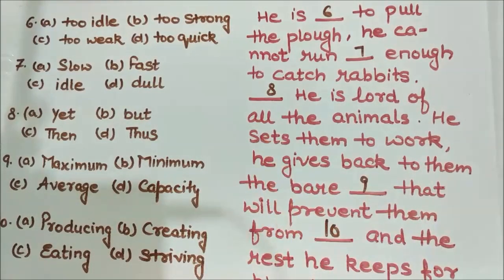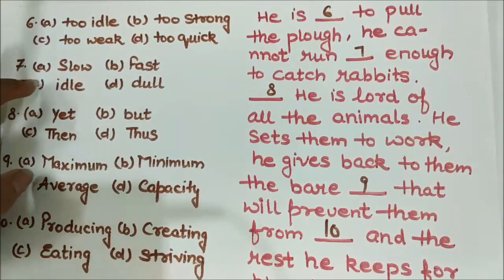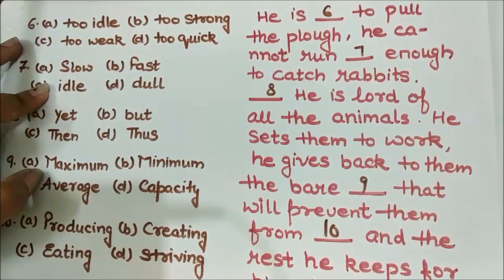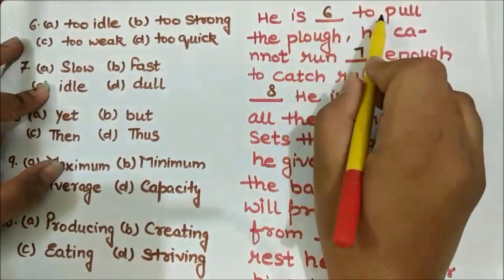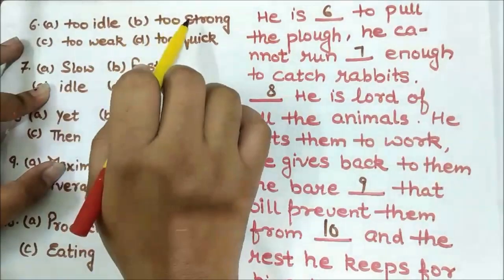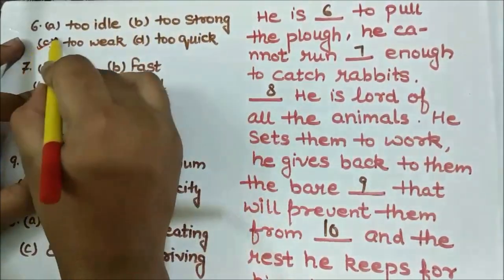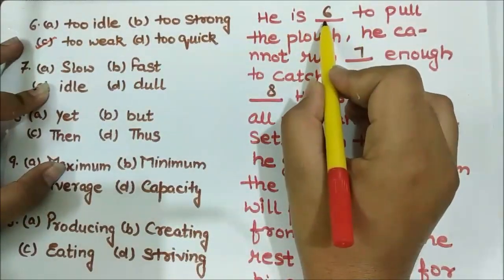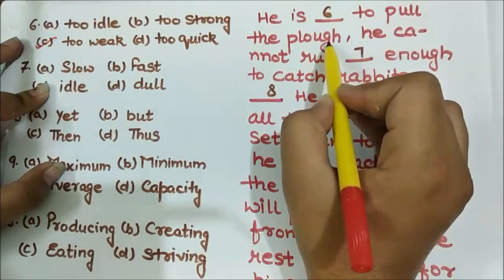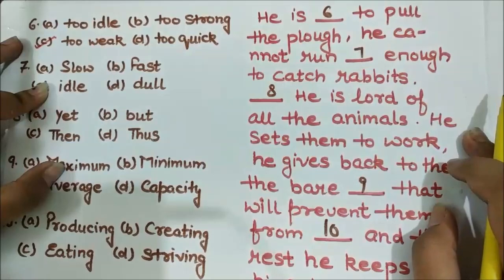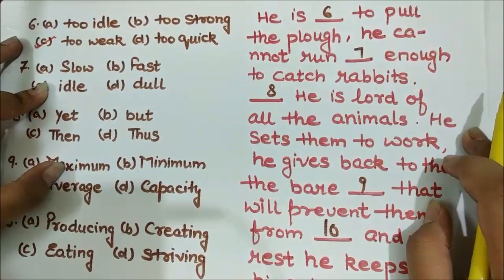The sixth blank: 'He is ___ to pull the plow.' In plowing, it takes a lot of power — that's why we use bulls, because they have powerful bodies. The options are too idle, too strong, too weak, or too quick. The answer is 'too weak' — he is too weak to pull the plow because he is not physically strong enough to plow.